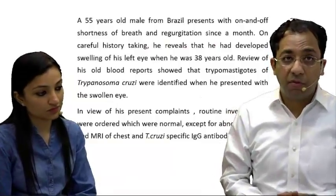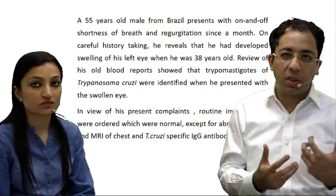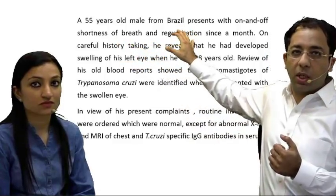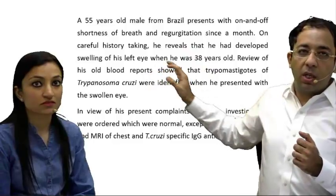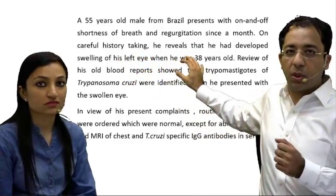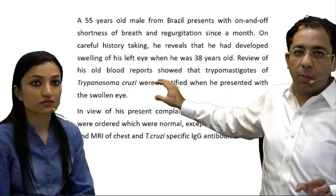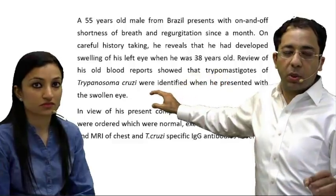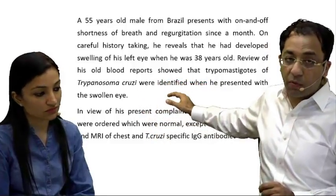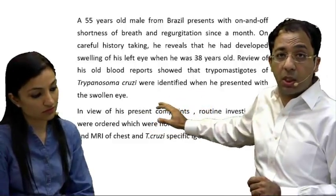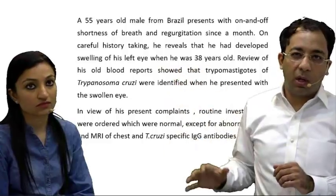Let's start with the history of the patient. This is a 55-year-old male from Brazil — the important clue in the history is the geographic location. He has an on-and-off shortness of breath and regurgitation since a month. Around 20 years back, at age 38, he had swelling of the left eye, at which time blood reports showed trypomastigotes of Trypanosoma cruzi. Currently, tests show abnormalities on chest X-ray, cardiac MRI, and positive Trypanosoma cruzi IgG antibodies in serum.